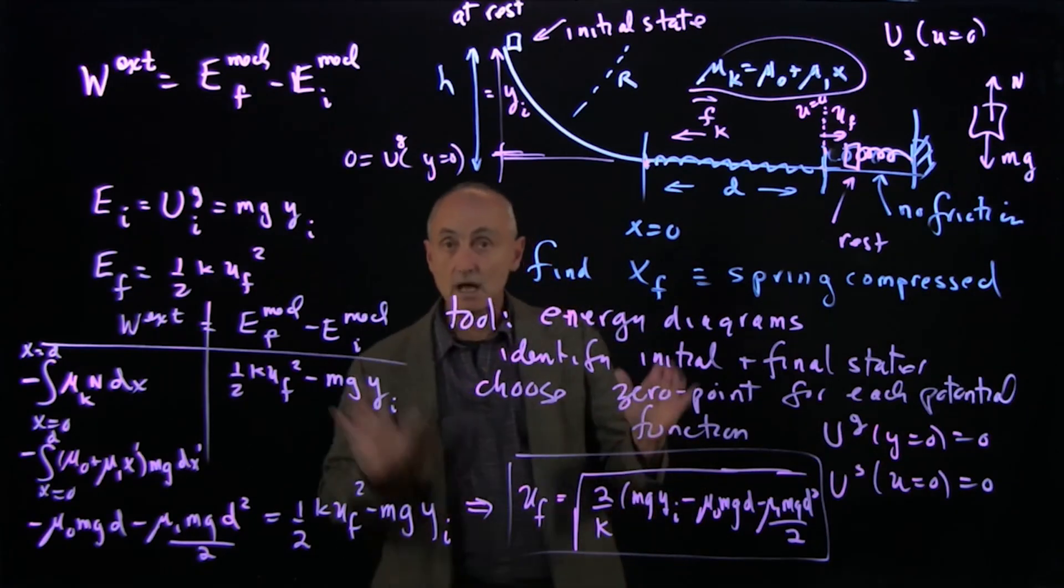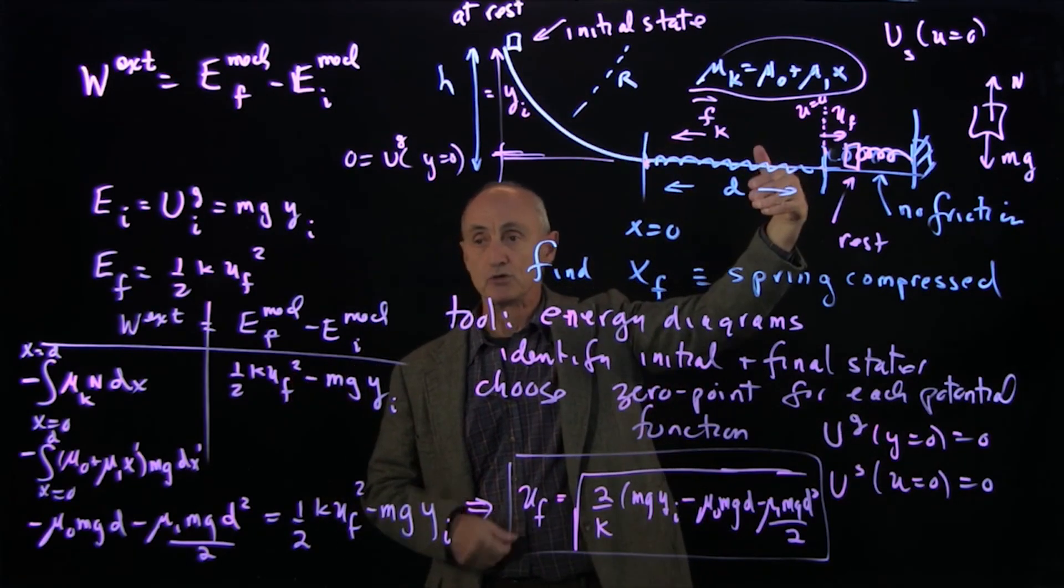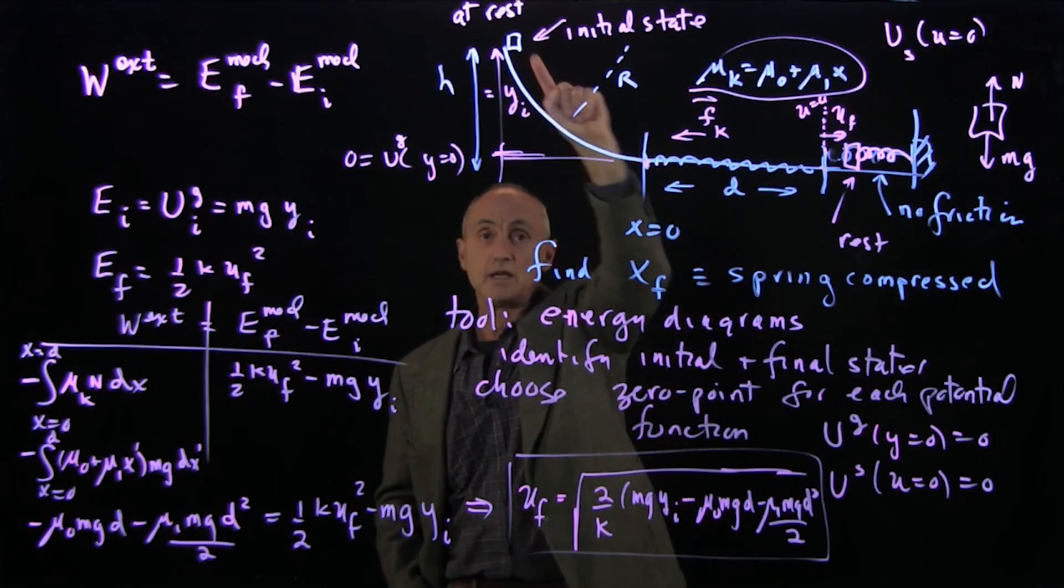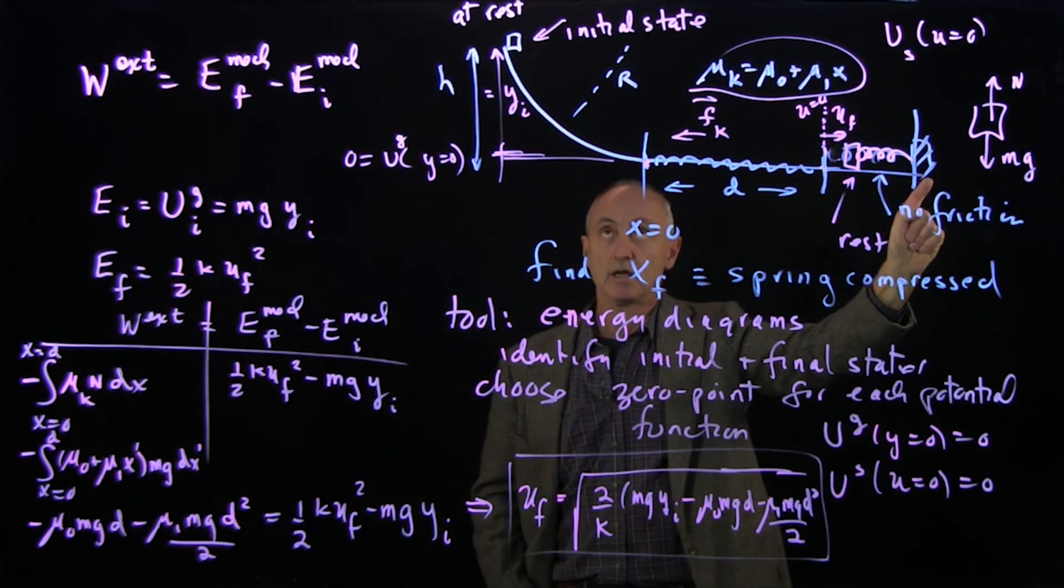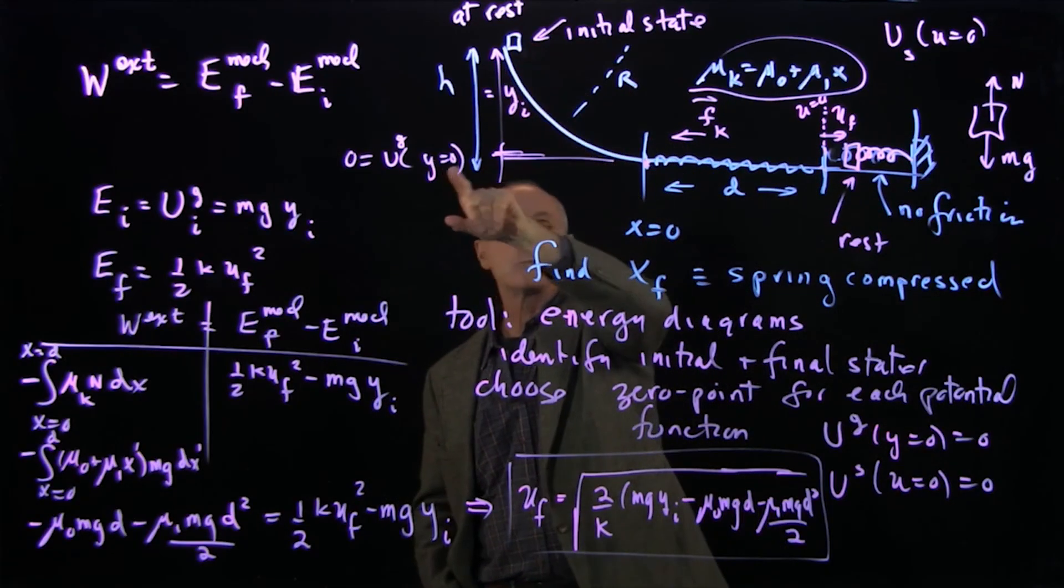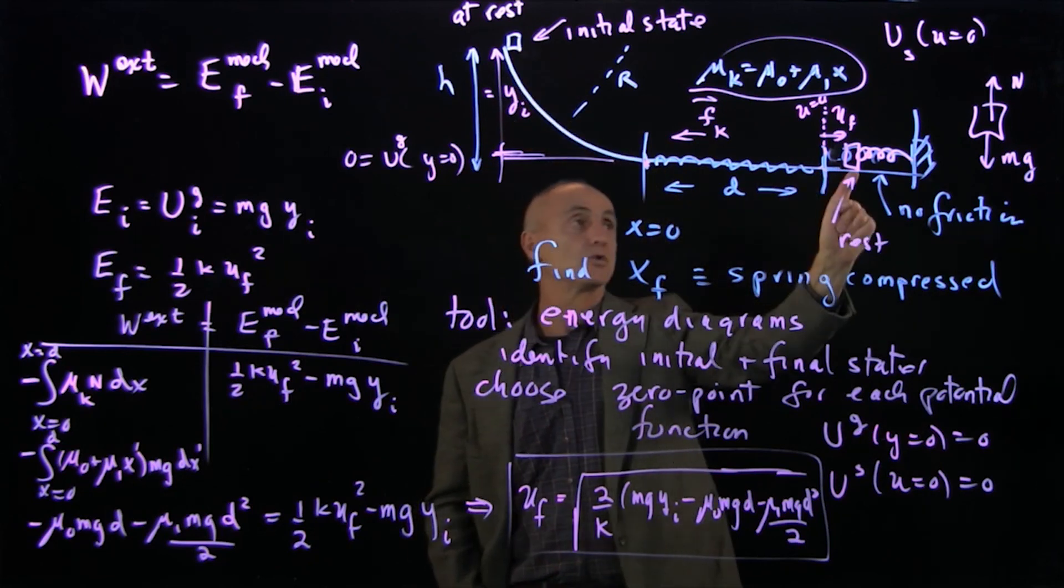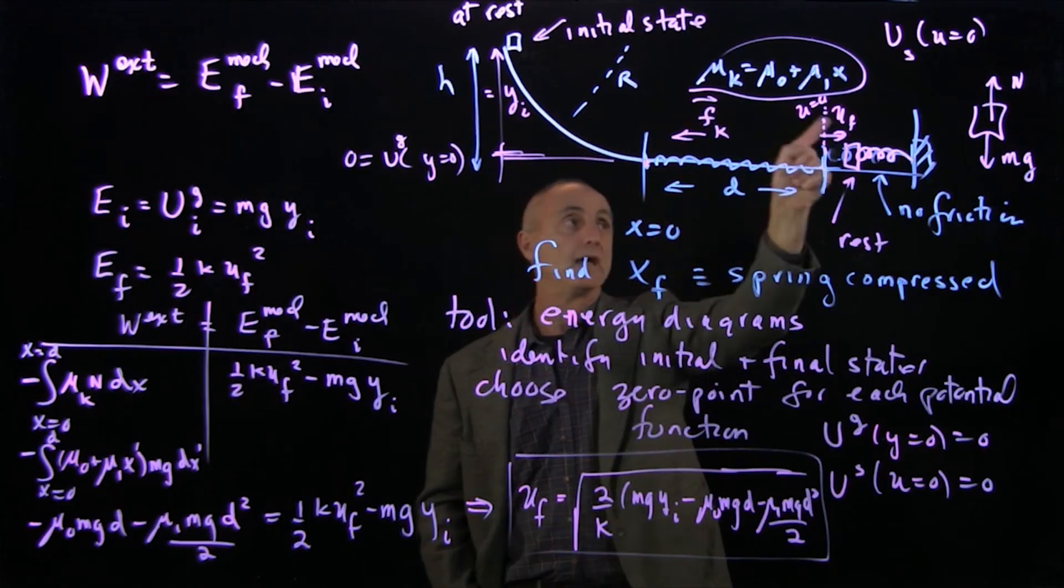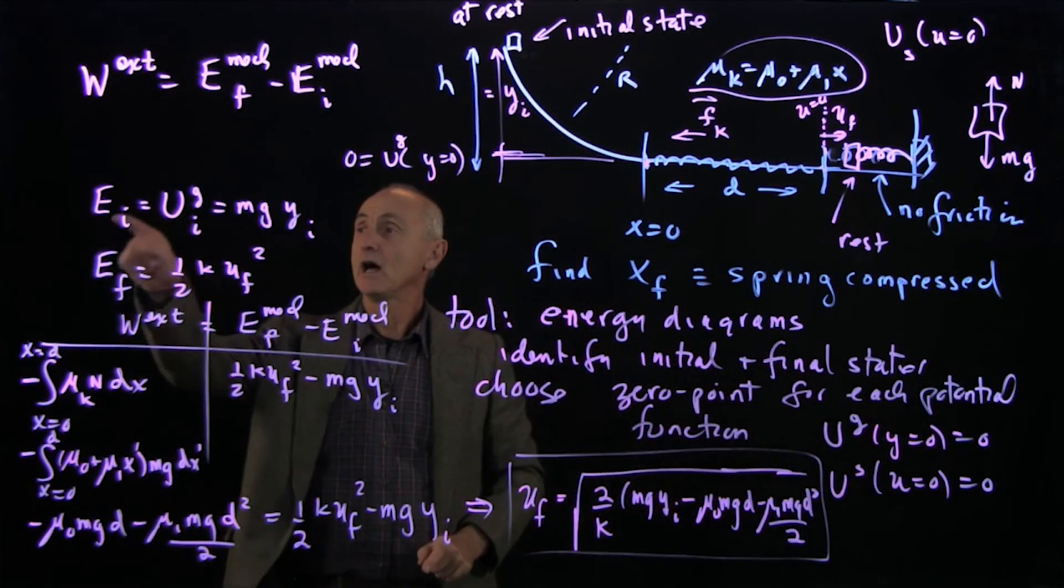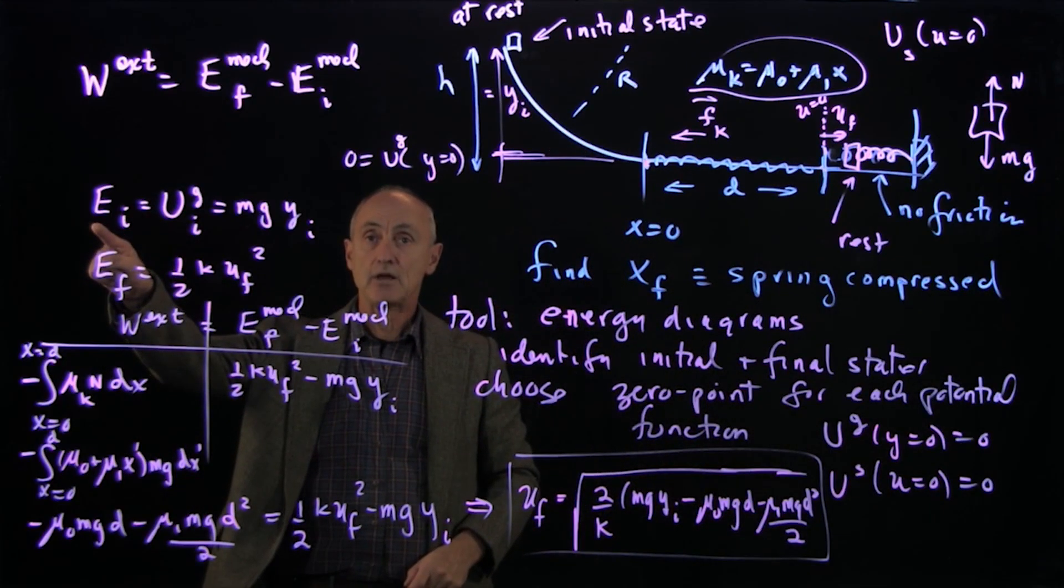Notice what I did not do was divide this up into a bunch of different motions. I picked an initial state. I picked the final state. I drew my energy diagrams with my zero points. I described the key parameters of the initial and final states, yi and u final. I defined the initial mechanical energy, the final mechanical energy,